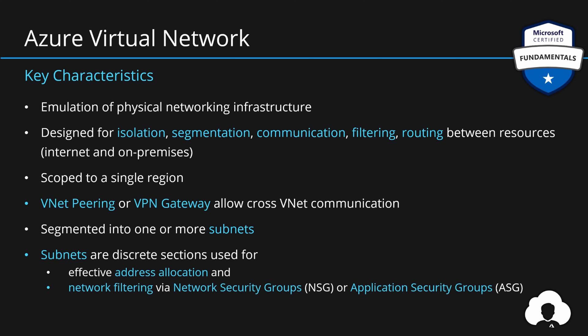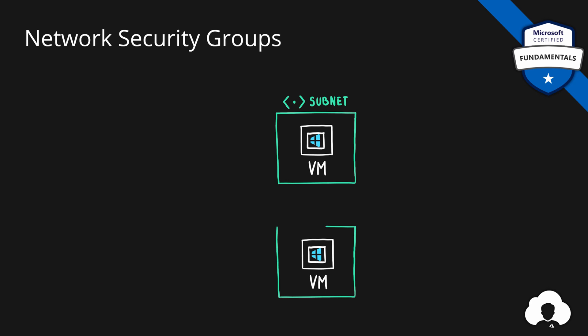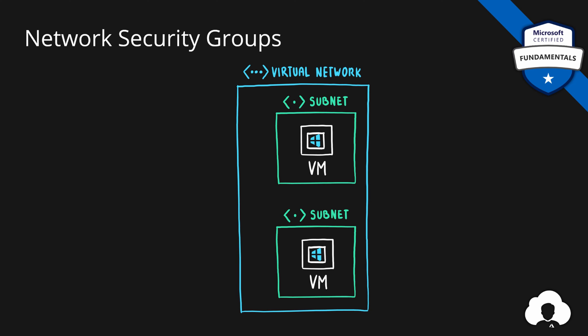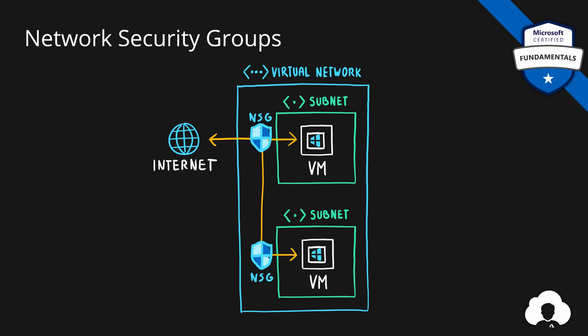Subnets allow customers to divide virtual networks so they can better and more effectively manage their IP address allocation, but also manage network filtering through something called network security groups or application security groups. For example, if you have two virtual machines in a single virtual network placed in two separate subnets, you can place a network security group on a subnet to only allow specific traffic to reach that virtual machine. You can also use network security groups to manage traffic across subnets — it's really a tool to manage your networking in a secure and efficient manner.